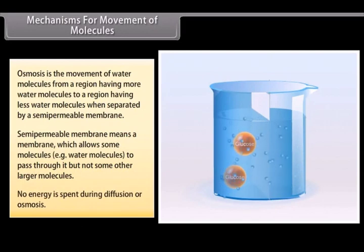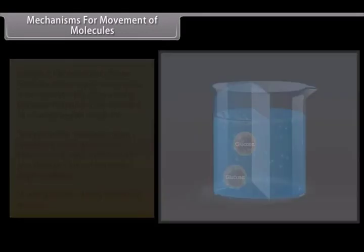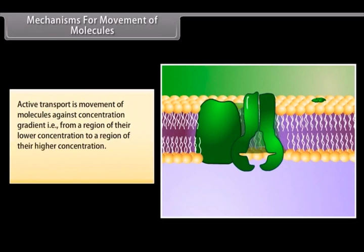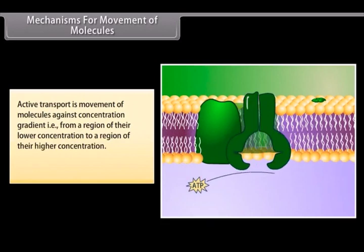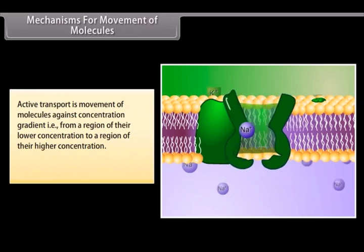No energy is spent during diffusion or osmosis. Active transport is movement of molecules against concentration gradient, that is from a region of their lower concentration to a region of their higher concentration. Energy is required in active transport.